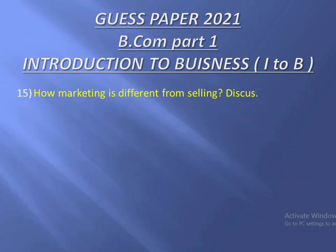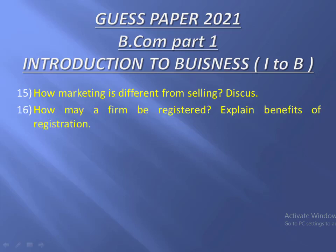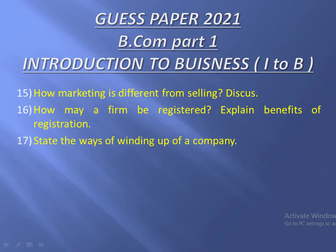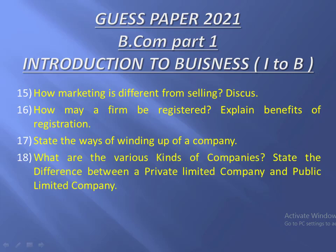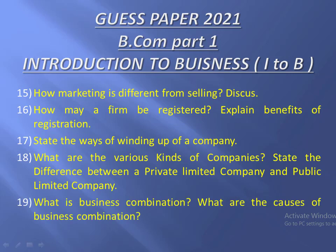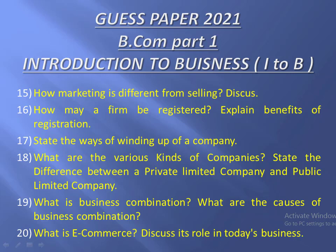Question number fifteen: How marketing is different from selling — discuss. Question number sixteen: How may a firm be registered, explain benefits of registration. Question number seventeen: State the way of winding up of a company. Question number eighteen: What are the various kinds of companies, state the difference between a private limited company and public limited company. Question number nineteen: What is business combination, what are the causes of business combination. Question number twenty: What is e-commerce, discuss its role in today's business.